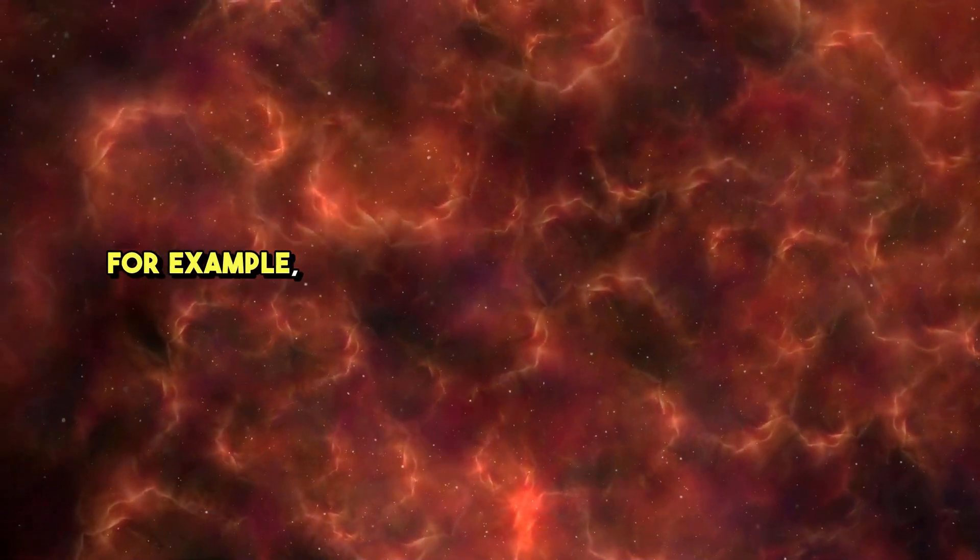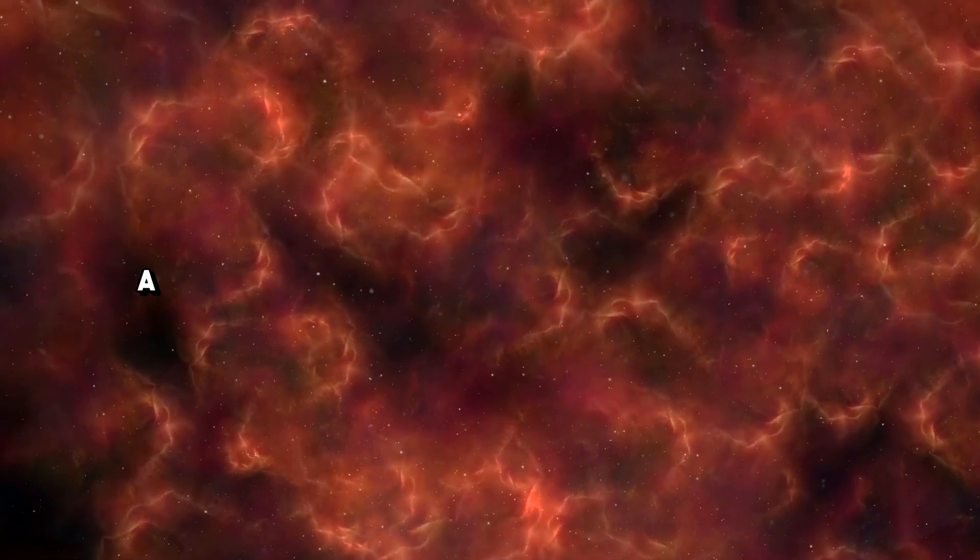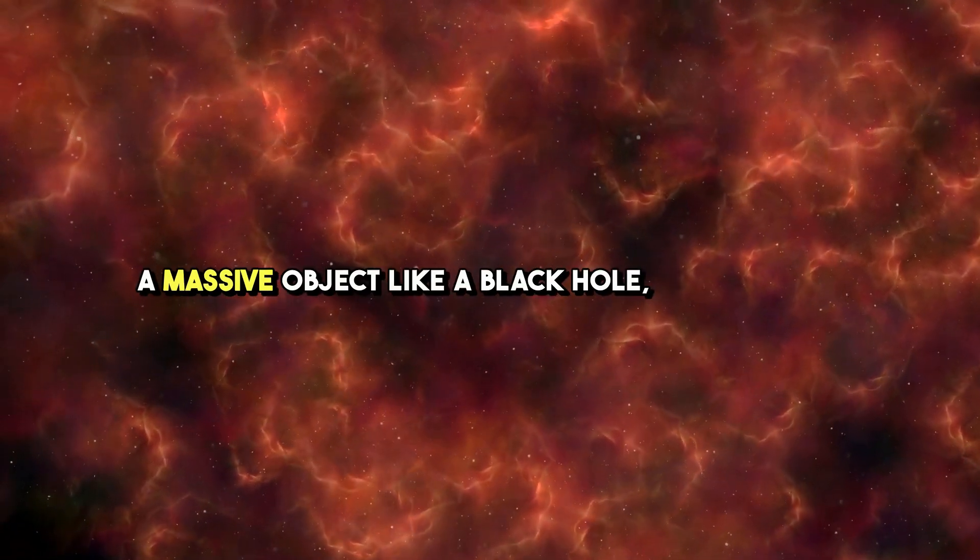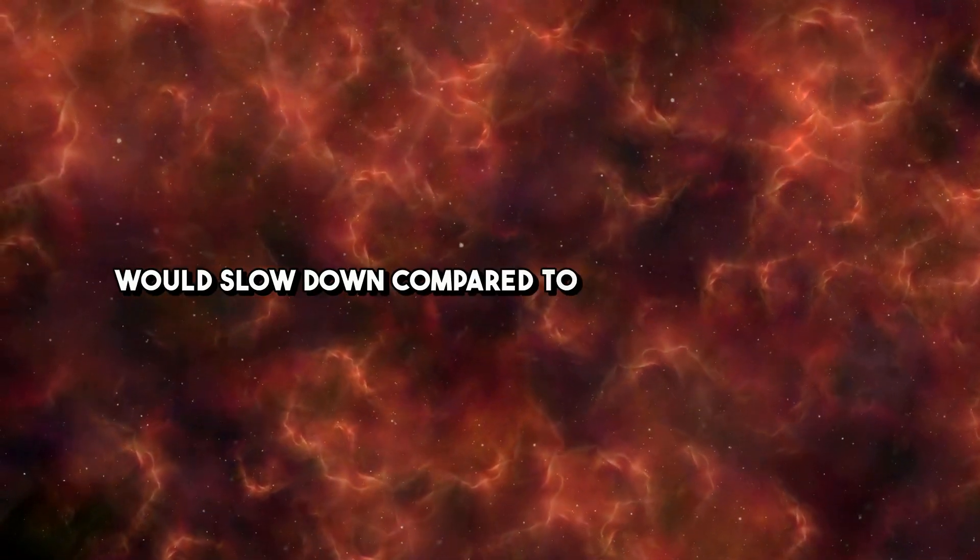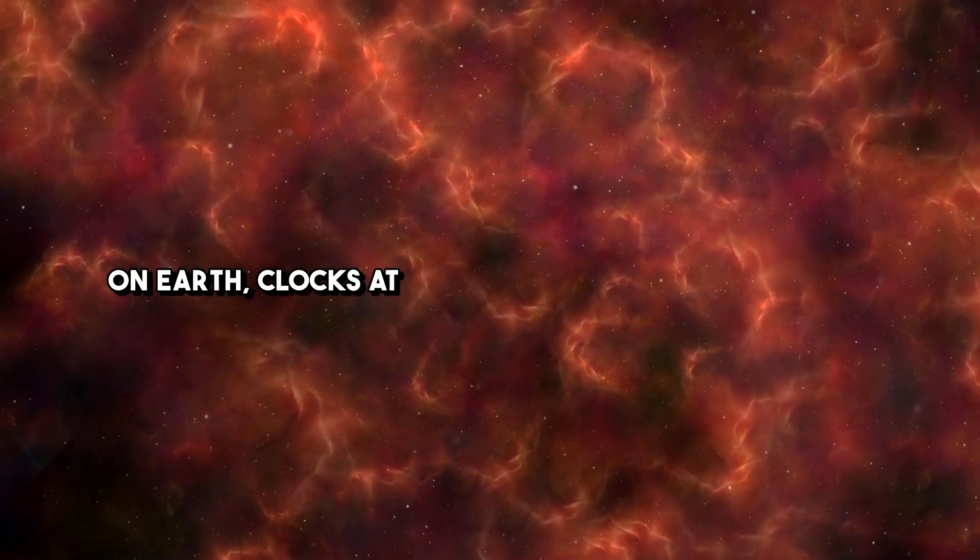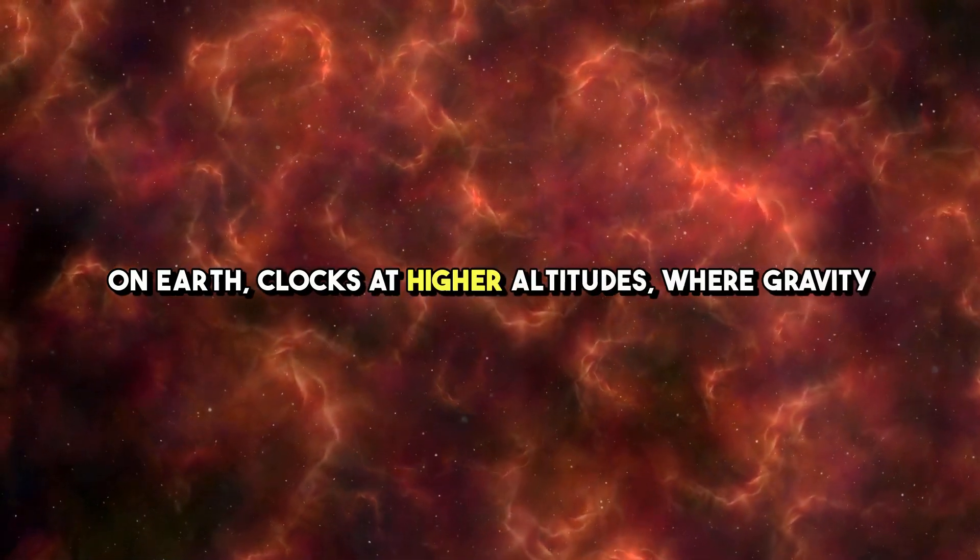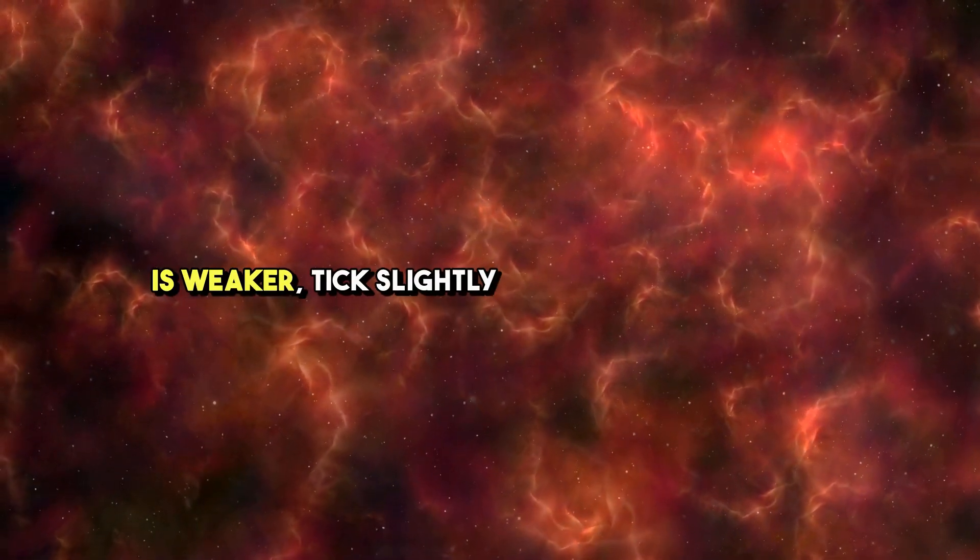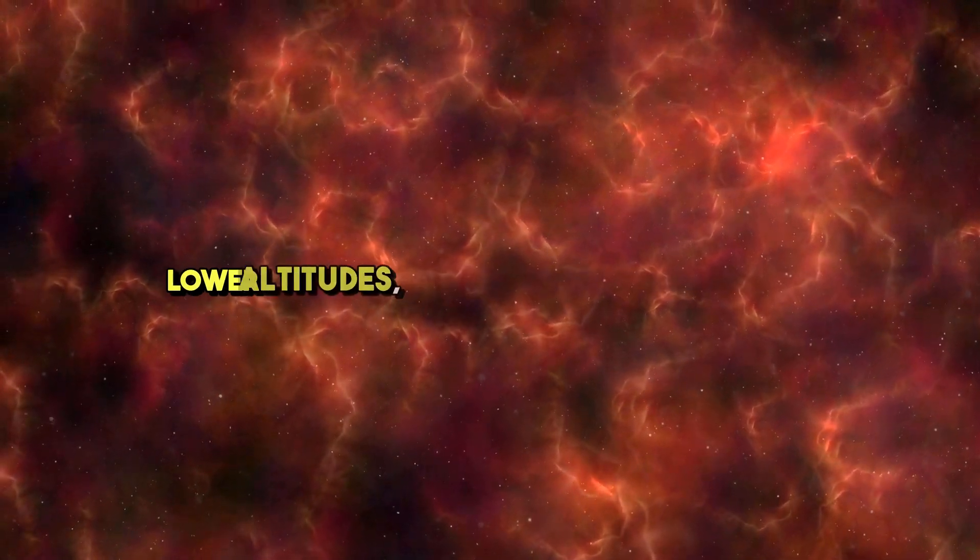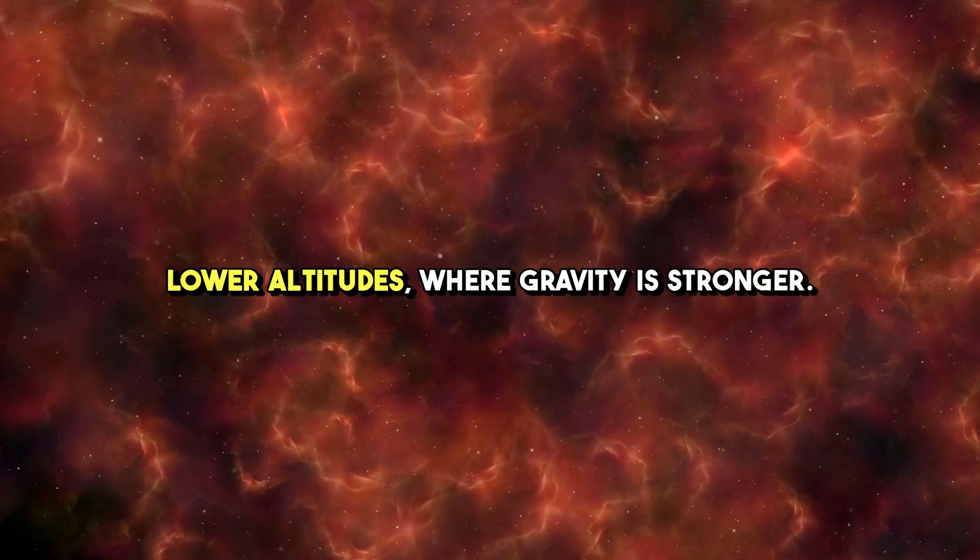For example, if you were standing near the surface of a massive object like a black hole, time for you would slow down compared to someone far away. This has been confirmed with atomic clocks on Earth. Clocks at higher altitudes, where gravity is weaker, tick slightly faster than clocks at lower altitudes, where gravity is stronger.